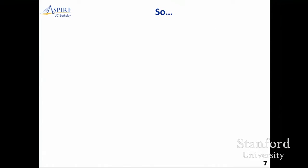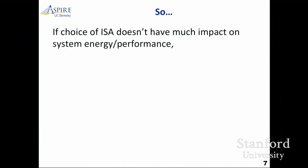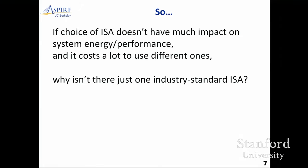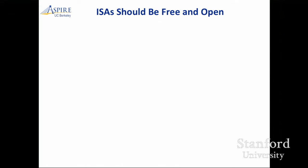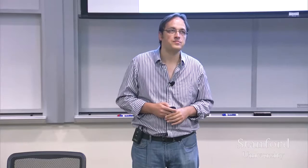So given that the choice of ISA doesn't have much impact on end system energy performance, and it costs a lot to use different ones — why is there more than one? Makes no sense. We say there's no reason. There should be one ISA, should be free and open, should be standard just like Ethernet — a standard where you connect parts of the industry together, the hardware guys and the software guys.